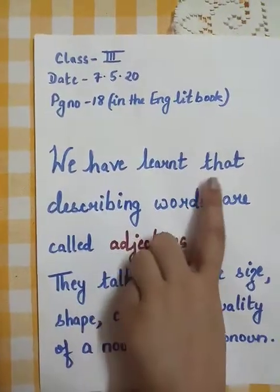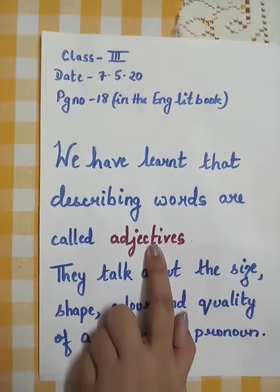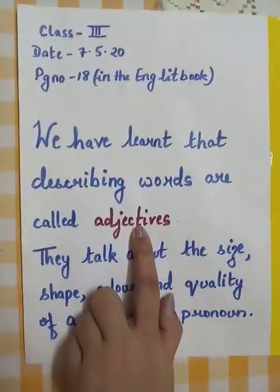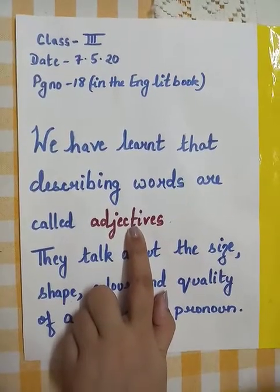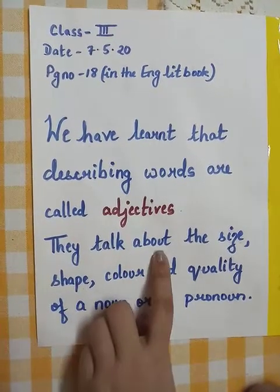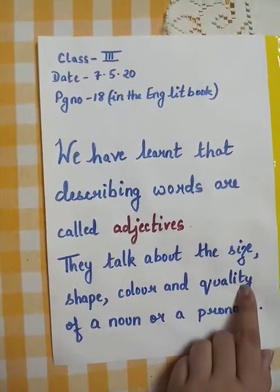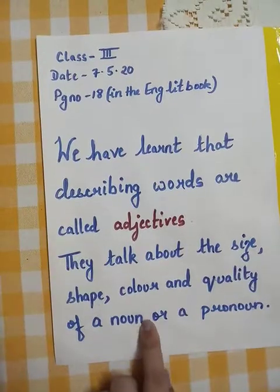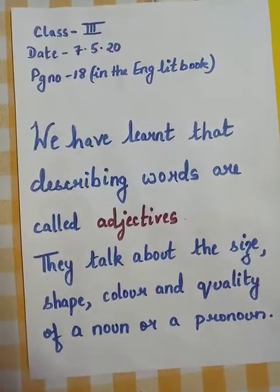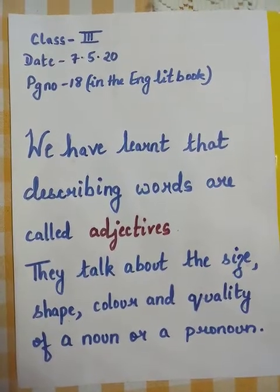We have learnt that describing words are called adjectives. What are adjectives students? Adjectives are describing words. When we describe something, those are known as adjectives. They talk about the size, shape, color and quality of a noun or a pronoun.